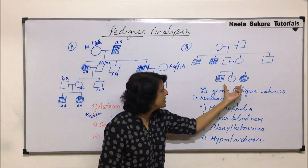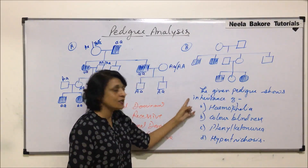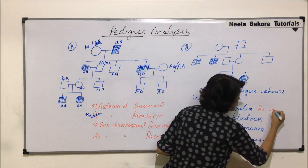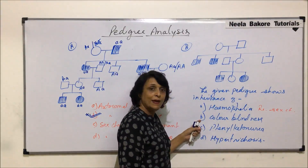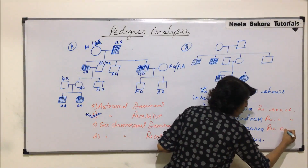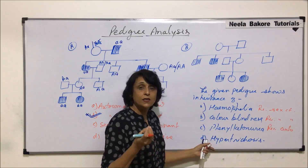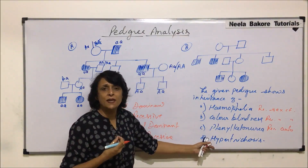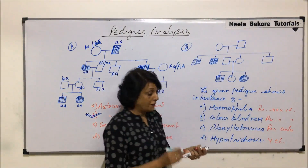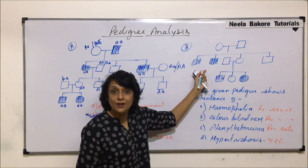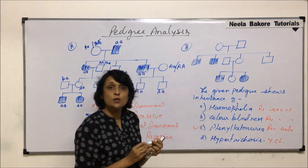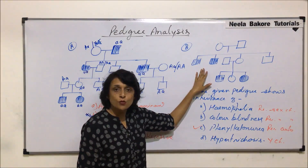Since affected individuals include both males and females, it cannot be sex chromosomal. Among the four diseases given: hemophilia is recessive sex-chromosomal, colorblindness is recessive sex-chromosomal, phenylketonuria (PKU) is recessive autosomal, and hypertrichosis — excess hair on the pinna — is a Y-linked condition affecting only males. The only recessive autosomal disease among them is phenylketonuria.